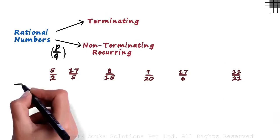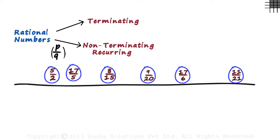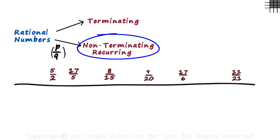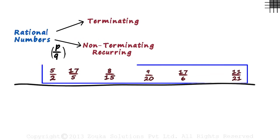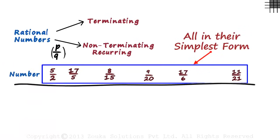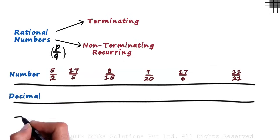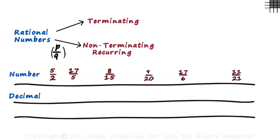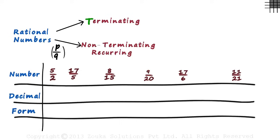Without calculating the value of each in decimal form, can you directly tell the category each of them falls into? This category or this one? Let's make three rows and analyze it. Let this be the row of our numbers. Just for our understanding, let us calculate the decimal values of each in this row. And we write the form of each decimal in this row. By form, I mean either this or this. We will write T if it's terminating and NTR if it's non-terminating recurring.